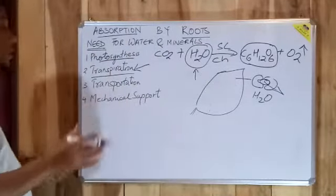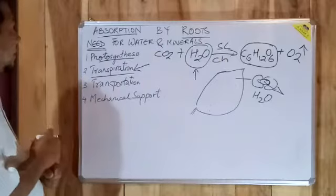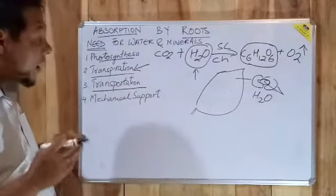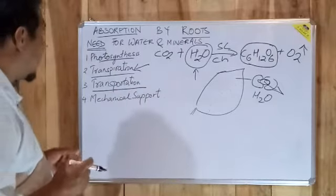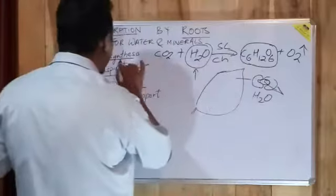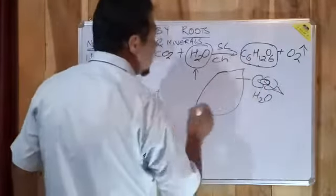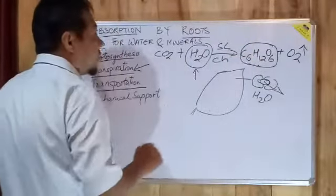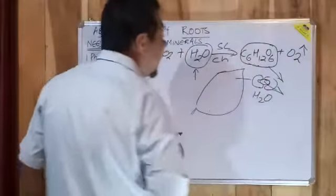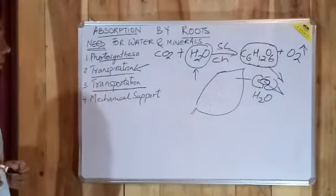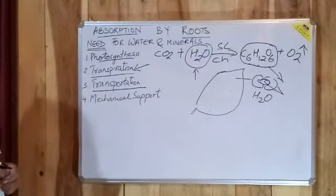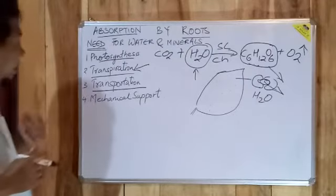Next step is transportation. What is transportation? These minerals or the product formed during the process of photosynthesis, that is glucose which is formed in every leaf of the plant, has to be transported to the different parts of the plant body.